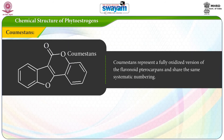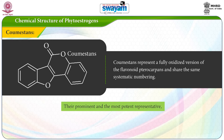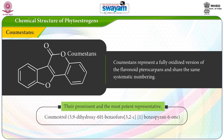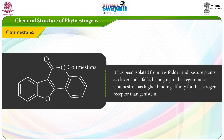Coumestans represent a fully oxidized version of the flavonoid pterocarpins and share the same systematic numbering. Their prominent and most potent representative is coumestrol, i.e. 3,9-dihydroxy-6H-benzofuro-benzopyran-6-one. Coumestans have been isolated from a few fodder and pasture plants such as clover and alfalfa belonging to the Leguminaceae. Coumestans have a higher binding affinity for the estrogen receptor than genistein.